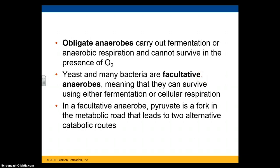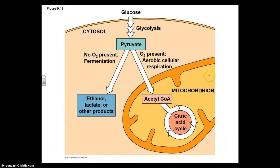There are organisms that are obligate anaerobes, meaning they are obligated to carry out anaerobic fermentation or anaerobic respiration and cannot survive in the presence of O2. Other organisms are facultative anaerobes — they can survive both with and without oxygen, using oxygen for cellular respiration when available. For a facultative anaerobe, pyruvate could follow a fermentation path to form ethanol or lactate, or it can enter the mitochondrion and produce 32 or more ATP via aerobic cellular respiration.